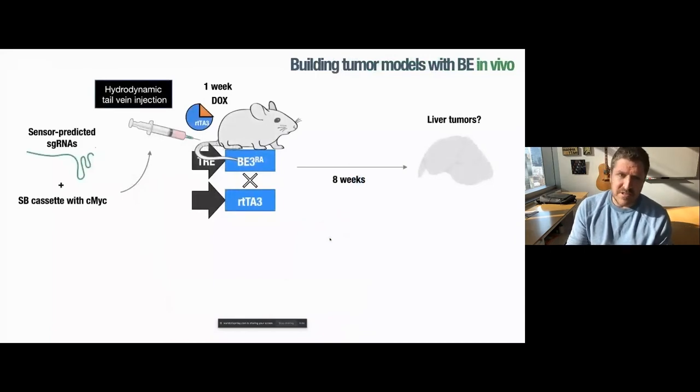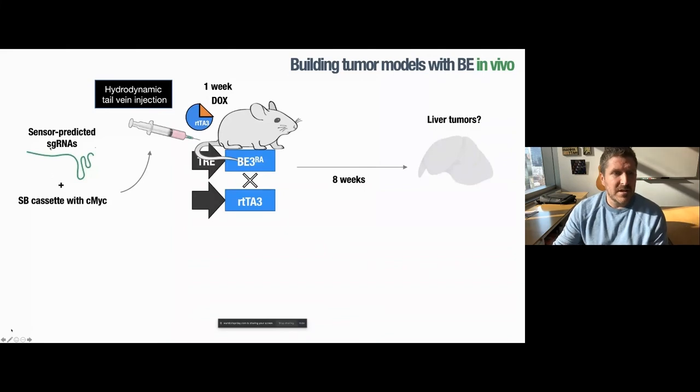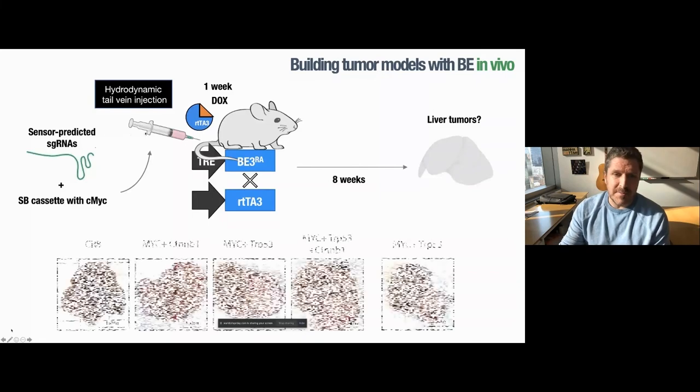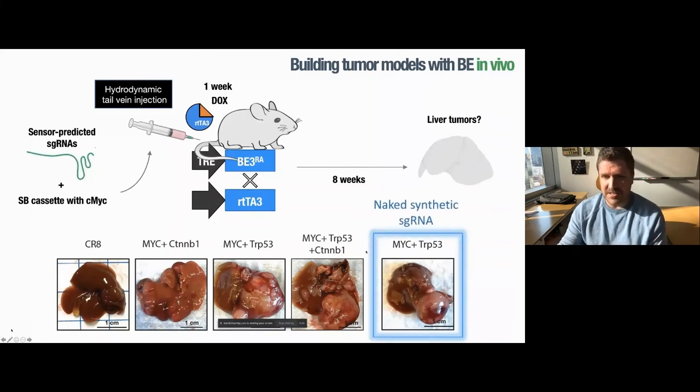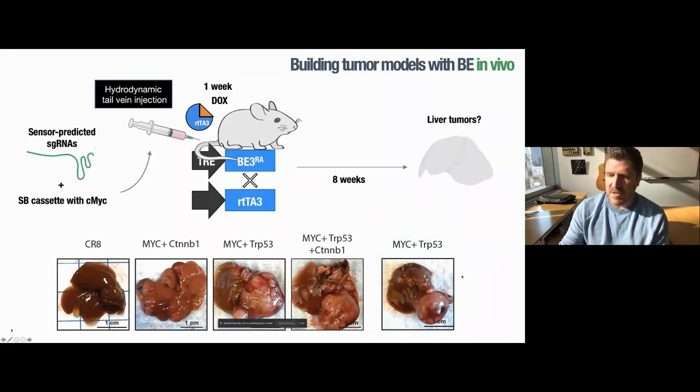So you can also do this in vivo. Here we're using a liver model where we can deliver a MYC transgene on a Sleeping Beauty cassette, as well as sensor validated or sensor predicted guide RNAs by hydrodynamic tail vein injection. And when you do this either with single sgRNAs that cause liver cancer associated mutations like hotspot mutations in beta-catenin or with just naked synthetic sgRNA from Synthego, you can develop tumor models in vivo using this mouse.